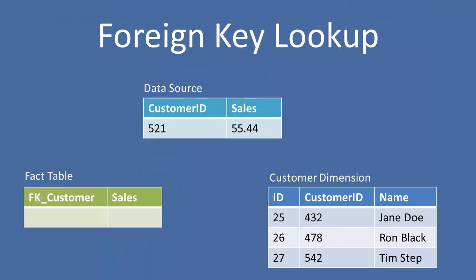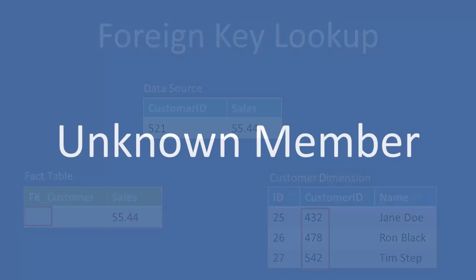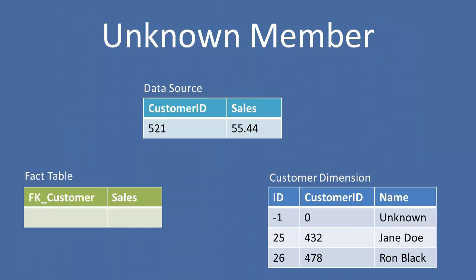Now when we have an early arriving fact, such as here where we have customer ID 521, but there is not a 521 customer ID in our dimension — we don't have a surrogate key to place in our fact table yet. What are we going to do in this case? Well, one option is we could create or utilize an unknown member.